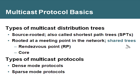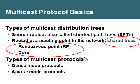The other type of distribution tree is known as a shared tree. In this type of distribution tree, the sources are going to send their multicast traffic to a central location, or a rendezvous point. From there, the traffic is going to branch out by the shortest path to the recipients. This is less efficient, but it takes load off of the routers.